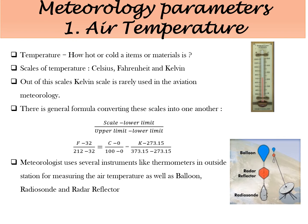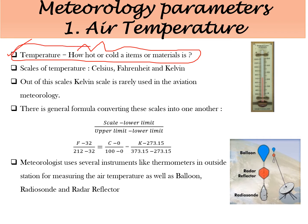The first parameter we would like to study is temperature. Temperature means how hot or cold an item or material is. The first parameter we are reading here is air temperature. Air temperature varies throughout the Earth's surface, and there are different kinds of temperatures found across the Earth's different topographies.